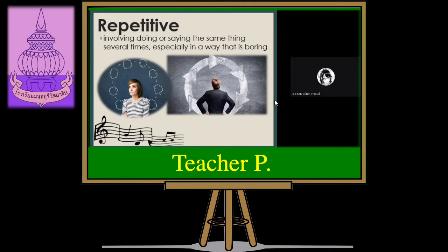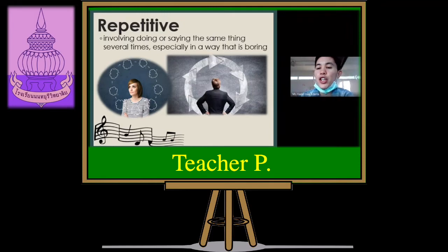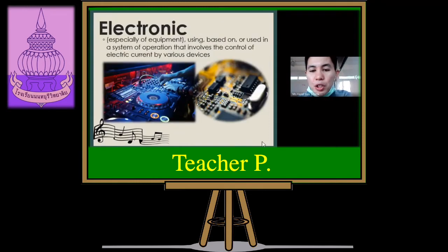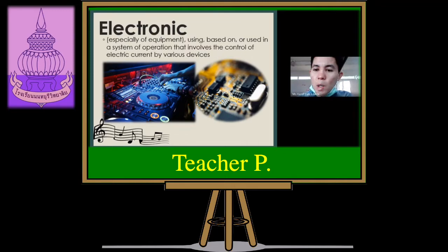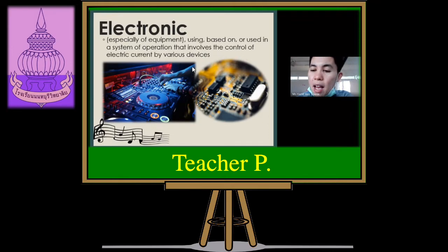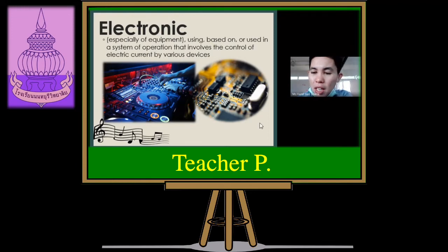When we say repetitive, it is something that you do again and again and again. Next, repeat after me: electronic. How does it spell? E-L-E-C-T-R-O-N-I-C. Electronic is actually equipment that we use to produce music, especially at parties.